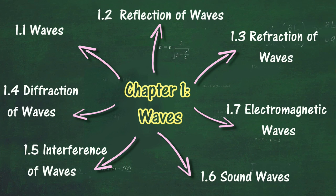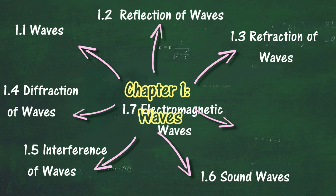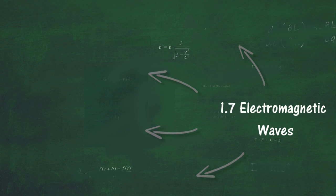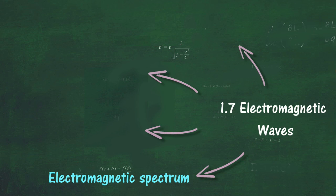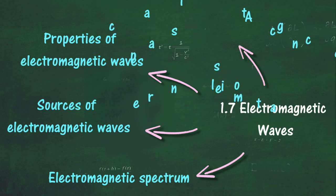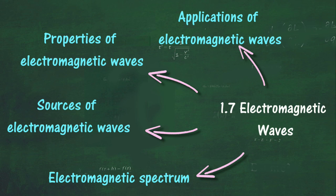At the end of this chapter, Section 1.7, we will learn about electromagnetic waves. At the end of this section, you should be able to describe the electromagnetic spectrum and state that visible light is a part of it, list sources of electromagnetic waves, describe the properties of electromagnetic waves, describe applications of electromagnetic waves, and describe the detrimental effects of excessive exposure to certain components of the electromagnetic spectrum.